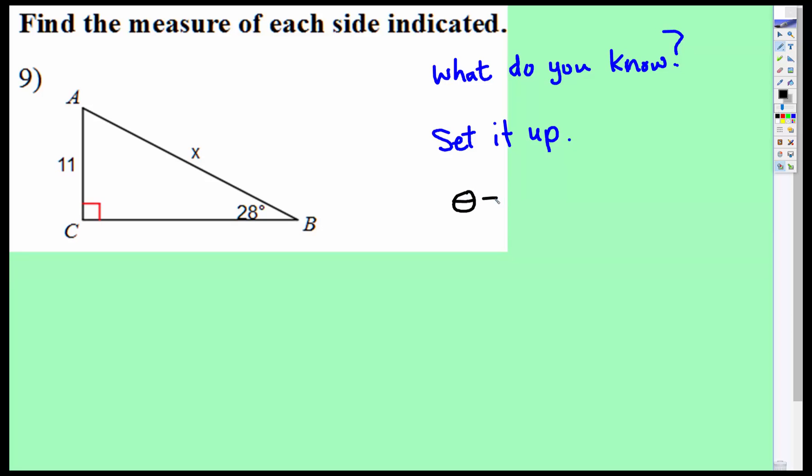We know the theta. The theta equals 28 degrees. And opposite the theta, so the opposite side, is 11. And we're supposed to find the hypotenuse. Remember, the hypotenuse is directly across from the right angle.